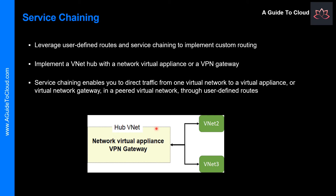In a hub-and-spoke architecture, the hub network can host infrastructure such as a network virtual appliance or VPN gateway, and spoke virtual networks can peer with the hub virtual network so that traffic flows through the virtual appliance or VPN gateway in the hub. Virtual network peering also enables the next hop in a user-defined route to be the IP address of a virtual machine in the peered virtual network or the VPN gateway. Service chaining enables you to direct traffic from one virtual network to the virtual appliance or gateway in a peered virtual network through user-defined routes.